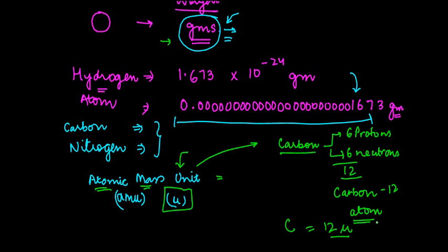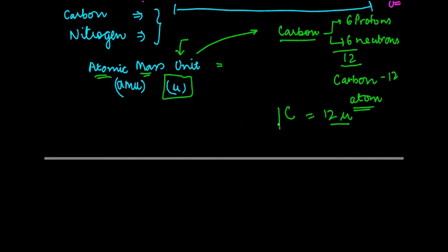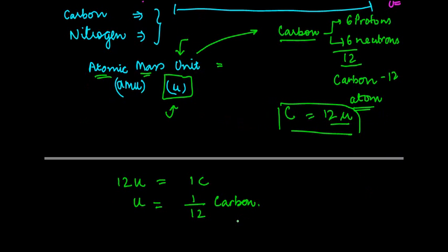If we just extrapolate this particular equation to find out what is the value of one atomic mass unit u, we know 12 u is equal to one atom of carbon. Or in other words, u is equal to one divided by 12 of one atom of carbon. So what we do is that this particular measurement is actually used to write down the value of any other atom.